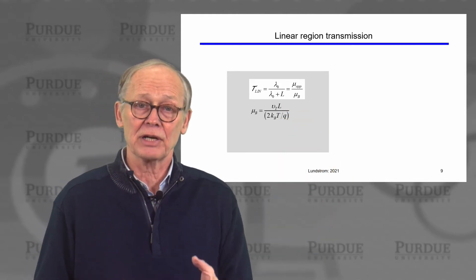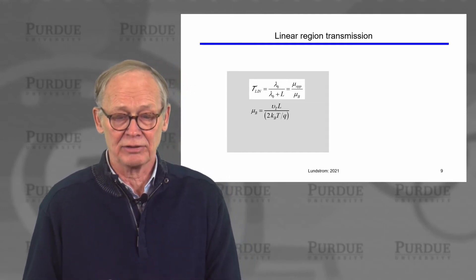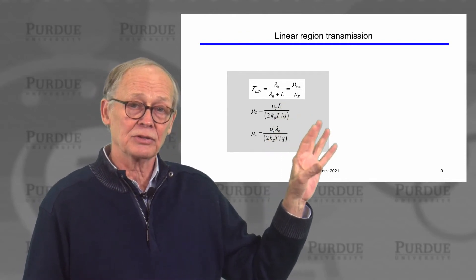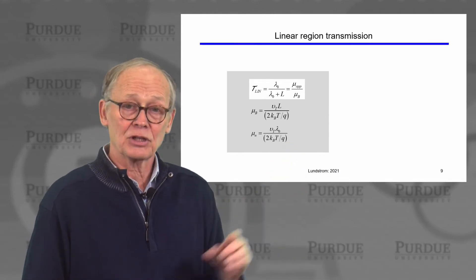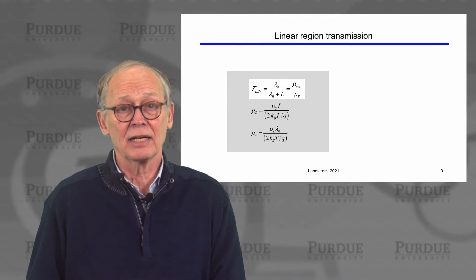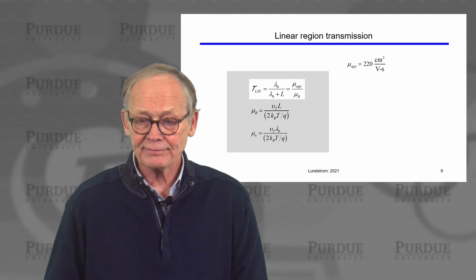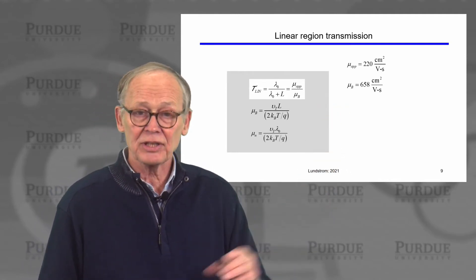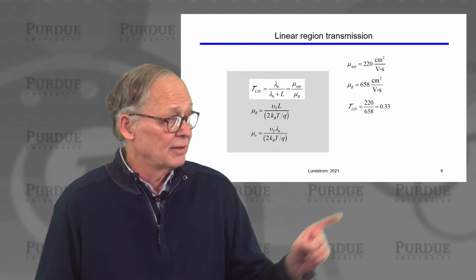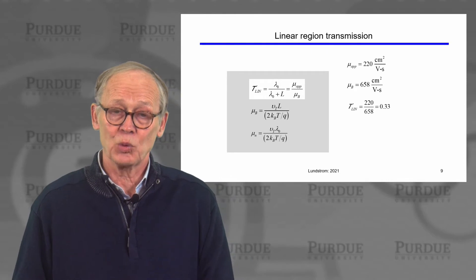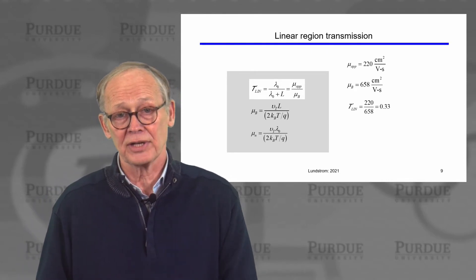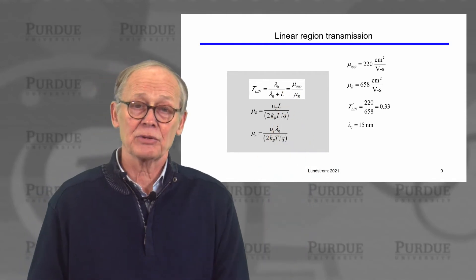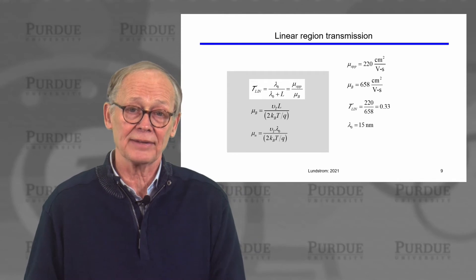The ballistic mobility is given by the unidirectional thermal velocity and the 30 nanometer channel length. The extracted apparent mobility was 220 centimeters squared per volt second, and the computed ballistic mobility is 658. Therefore, we deduce that the transmission is one-third — one-third of the electrons injected from the source travel across the channel and exit the drain. Putting that transmission back into our expression, we deduce the mean free path is 15 nanometers.